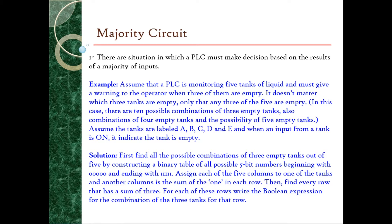In the majority circuit, there are situations when the PLC must make a decision based on the result of the majority inputs. For example, assuming that a PLC is monitoring five tanks of liquid and must give a warning to the operator when three of them are empty. It doesn't matter which tanks are empty, as long as three of the five tanks are empty. There might be more than 10 possible combinations of the inputs.